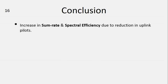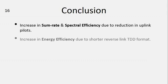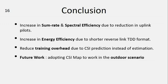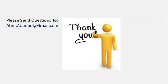By conclusion, we can infer that CSI map can increase the sum rate and spectral efficiency due to reduction in uplink pilots. It also can increase the energy efficiency due to shorter reverse link TDD format. It also reduces training overhead due to CSI prediction instead of estimation. For future work, we are looking to adopt CSI map to work in outdoor scenarios. We are sorry that we cannot attend this conference physically, and we thank you for your attention. We look forward to hearing your comments and questions on this proposal. Please send your comments to ahmaboud at gmail.com.